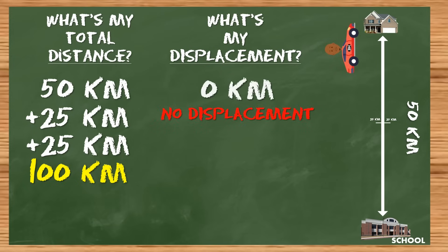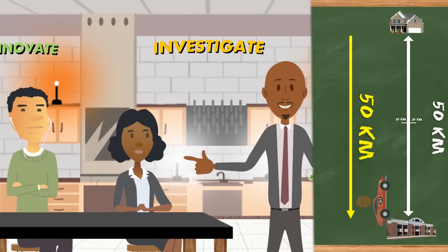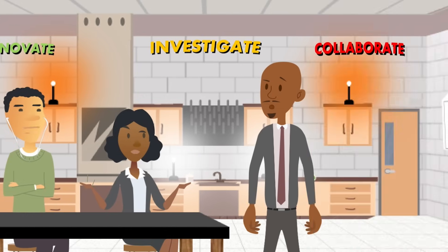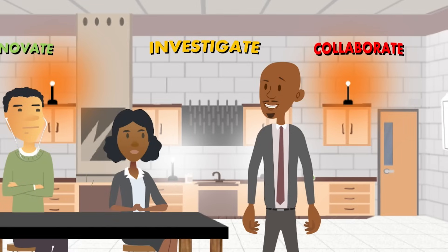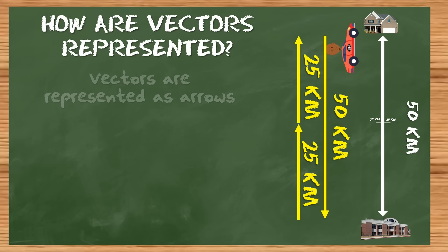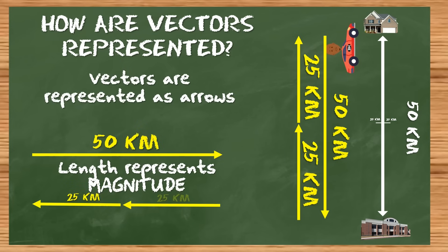We can represent these displacement values as vectors — and this time I mean vectors as a noun, not an adjective. We can represent any vector quantity as an arrow. The length of the arrow represents its magnitude, and the direction of the arrow represents the direction.